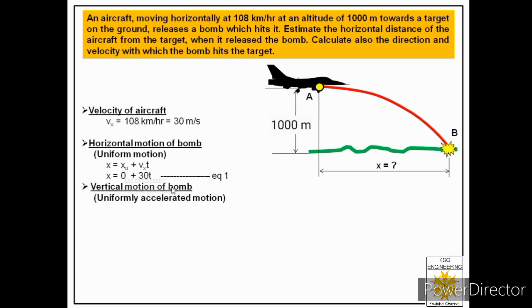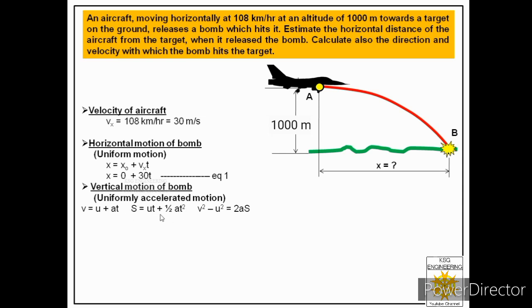Now we observe the vertical motion of the bomb, which is uniformly accelerated motion, so three equations are applicable: v = u + at; s = ut + ½at²; and v² − u² = 2as. In the first equation, v represents the final velocity of the bomb in the vertical direction, which is unknown, giving us two unknowns t and vy — so it won't help directly. The same issue applies to equation three. So we will use only the second equation: s = ut + ½at².